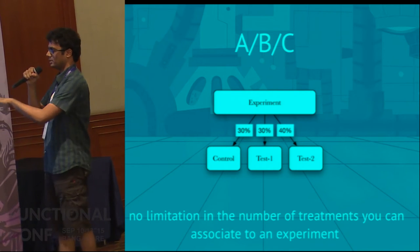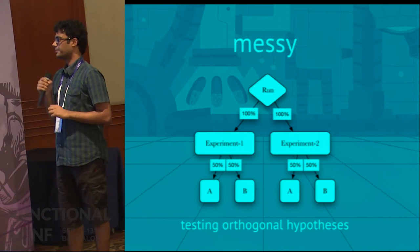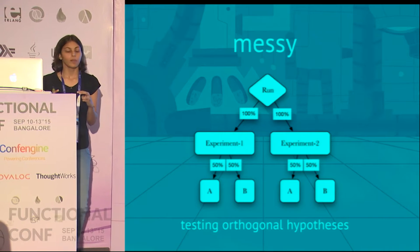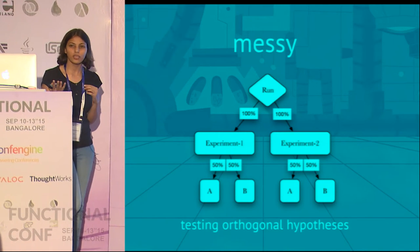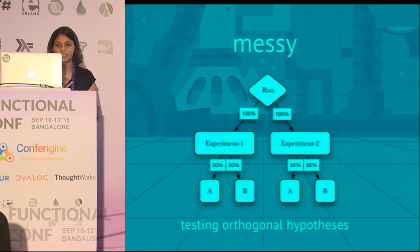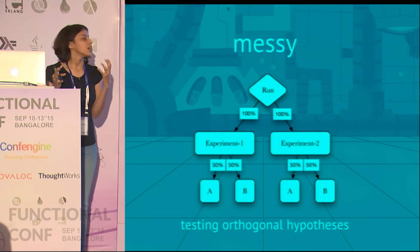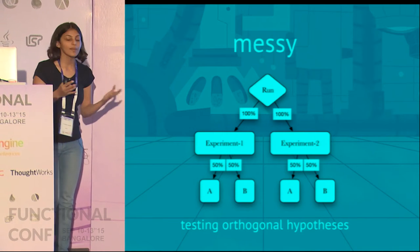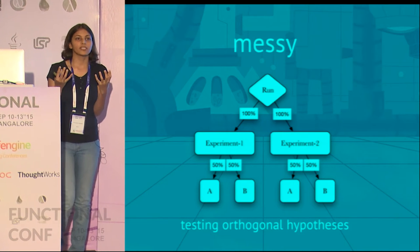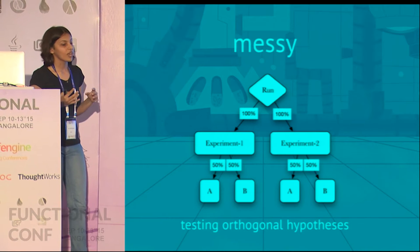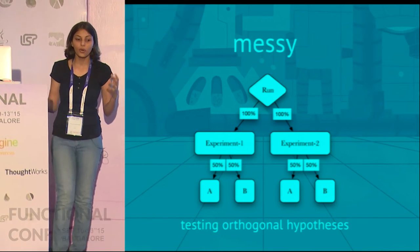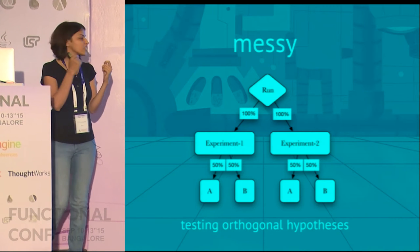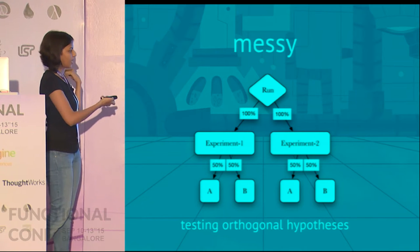Once you've set up your experiment, you want to run multiple experiments at the same time. One way is to share traffic between them — we call this the messy way of running experiments. A user which comes into your system can be part of both experiment one and experiment two. This type of setup is useful when you're trying to test two orthogonal hypotheses — for example, if you have an experiment running on the homepage and one on the checkout page, you know the user won't be affected by both experiments simultaneously, so the measurement of one won't be affected by the other.